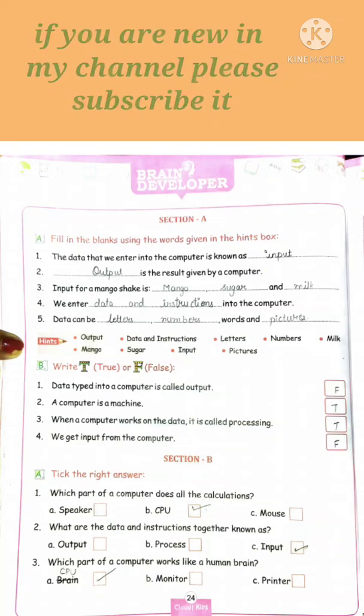Speaker se hum log sound sunte hain aur mouse se hum log input dete hain. So correct answer is CPU. Number two: what are the data and the instructions together known as? Answer is we call them input. So option C, input is the right answer.